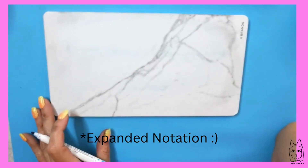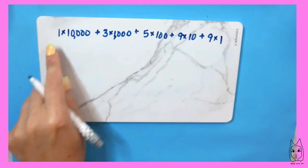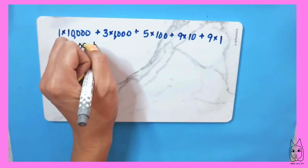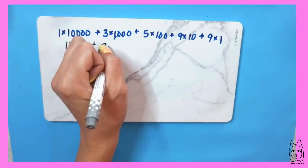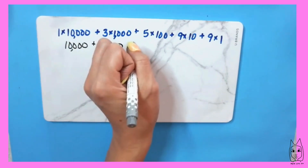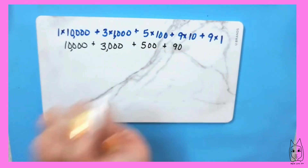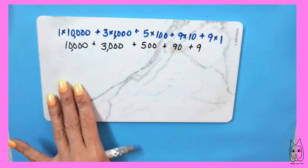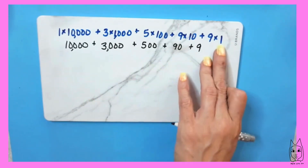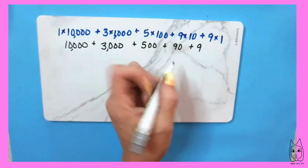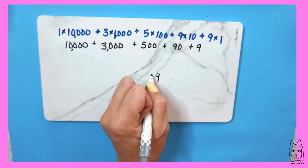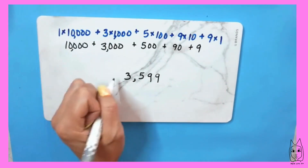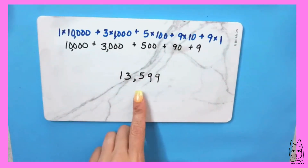This time I'm going to give it to you in expanded form. So this first one is 1 times 10,000 — that's 10,000. Then 3 times 1,000 — that's 3,000. Then 5 times 100 — that's 500. Then 9 times 10 is 90, plus 9 times 1 is 9. You know what place value each digit is in: the ones for the 9, the tens for the 9, the hundreds place for the 5, the 3 is in the thousands place, and the 1 is in the 10,000 place. Both ways will get you the answer — 13,599.